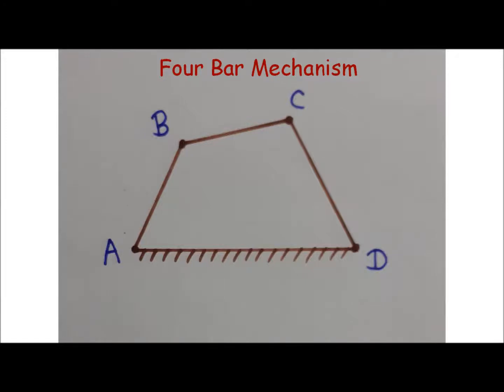The on-screen figure shows a four-bar mechanism ABCD. As it is a four-bar mechanism, there are four links in it: AB, BC, CD, and AD. These links are connected to each other with the help of turning pairs. There are four turning pairs; a turning pair is also known as a revolute pair.